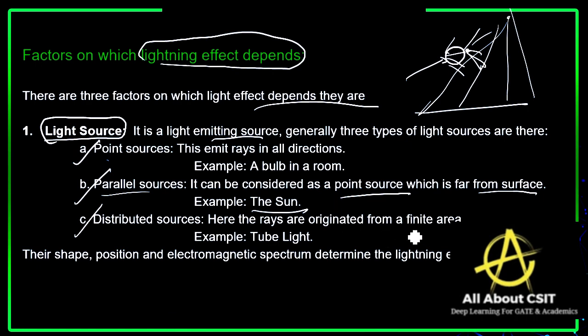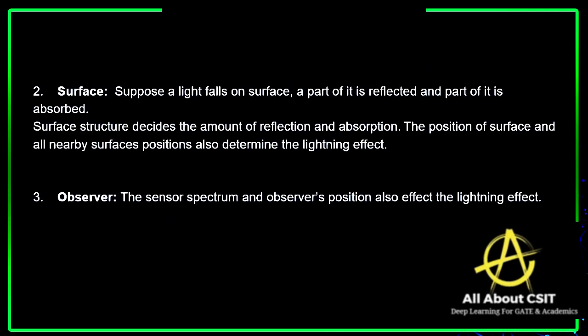A distributed source is one where rays originate from a finite area. For example, a tube light is a distributed source. The shape, position, and electromagnetic spectrum of the source determines the lighting effect.